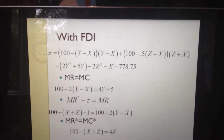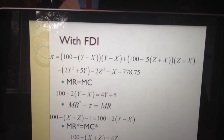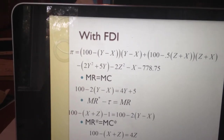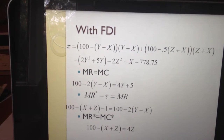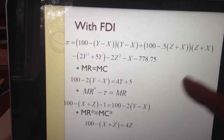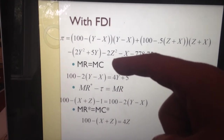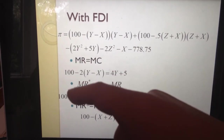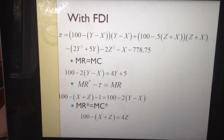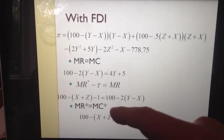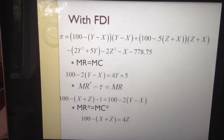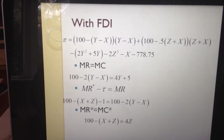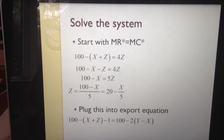What if they do FDI? What's different is now we have a Z — foreign direct investment. Step one is always write out your profit equation. Step two is always get your first-order conditions. We still have marginal revenue equals marginal cost, and what you get from selling in Ireland equals what you get selling overseas minus transport cost. But now there's something new: marginal revenue in the UK equals marginal cost in the UK, because you get to produce in both places.